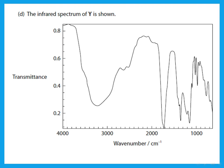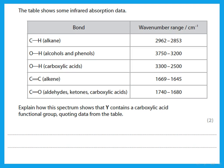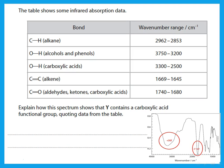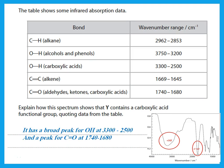The IR spectrum of Y is provided along with a data table. To explain how the spectrum shows that Y contains a carboxylic acid functional group: a carboxylic acid should show a peak for O–H and a peak for C=O. Looking at the spectrum, there is a broad O–H peak in the region 3300–2500 cm⁻¹ and a C=O peak in the region 1740–1680 cm⁻¹.